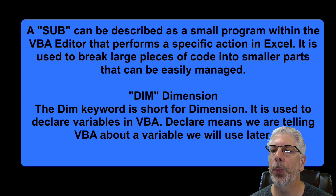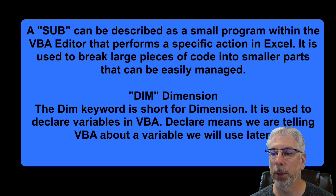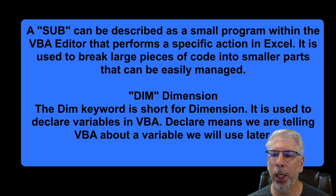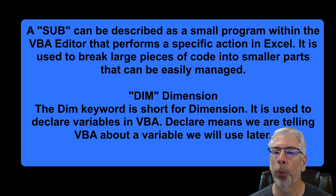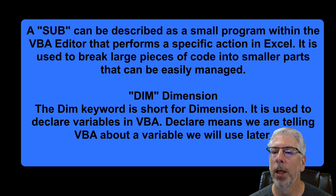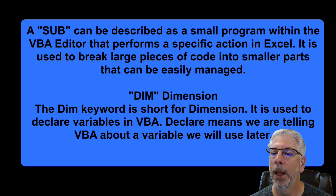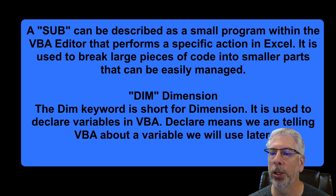That's indeed what we're doing. On those lines of code I showed you a minute ago, I've probably created maybe 100 to 150 different macros, and that is actually what we're creating when we're using this VBA editor. The second thing to describe is what 'dim' means — it's a keyword short for 'dimension,' and it's used to declare variables in VBA. Declare means we are telling VBA about a variable that we're going to use later.